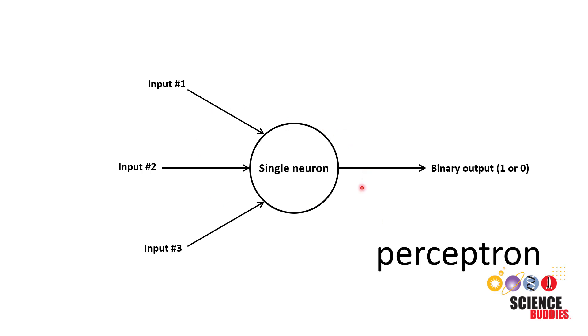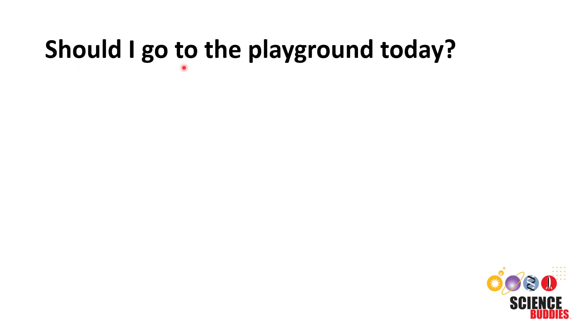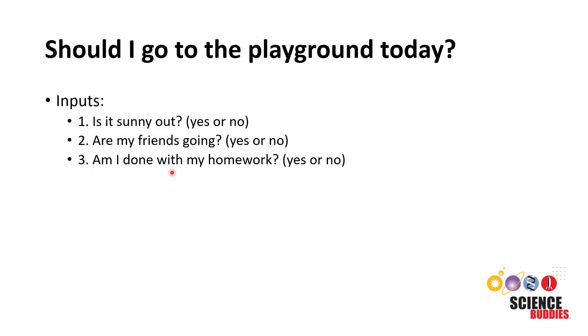Let's forget about this diagram for now and back up a bit and start with a simple word problem for our example. Say you want to make a decision like should I go to the playground today? You might consider various things or inputs when you make that decision. For example, you might ask is it sunny out? Are my friends going? And am I done with my homework?